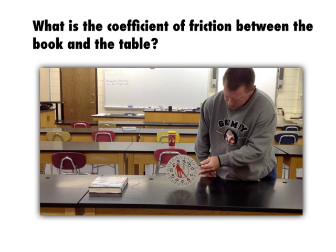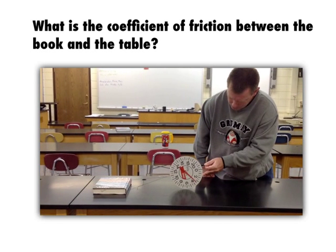To see how all this works, Mr. Thompson is going to do a simple lab to determine the coefficient of friction between a textbook and the table. He'll pull on the book with a spring scale that measures the force he's using, pulling the book along the table at a constant speed.